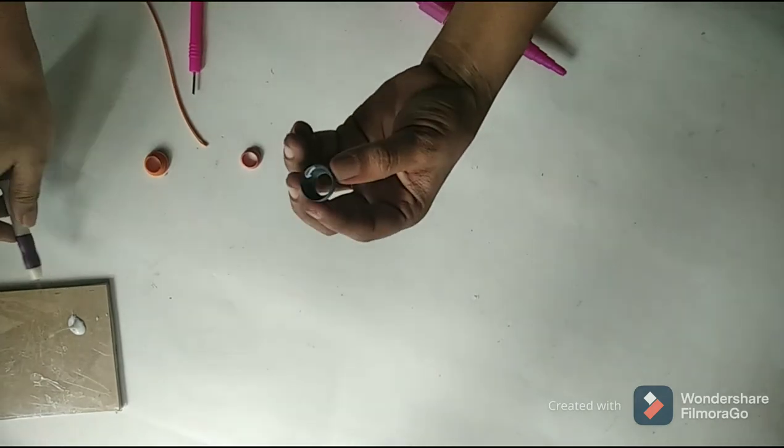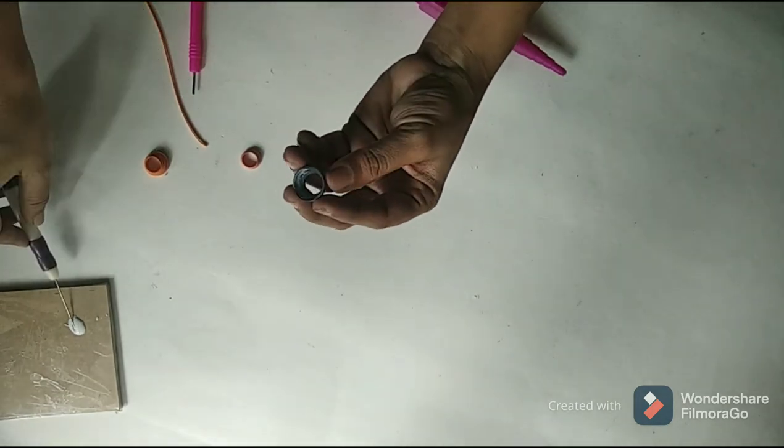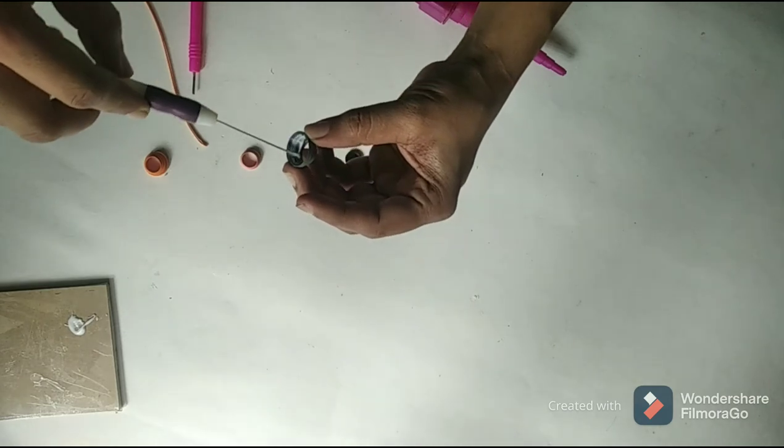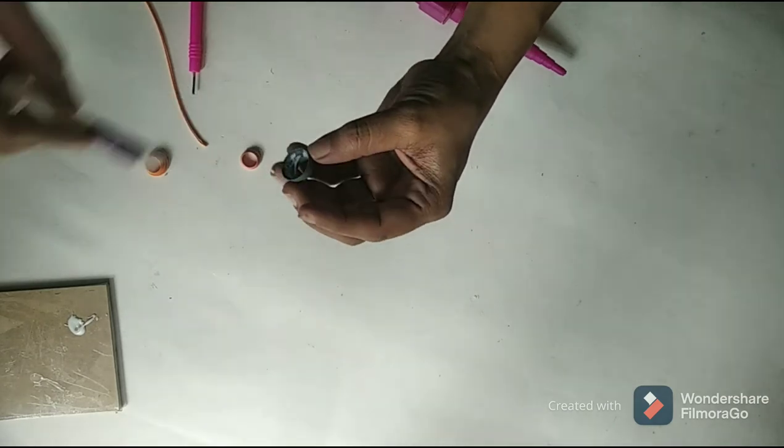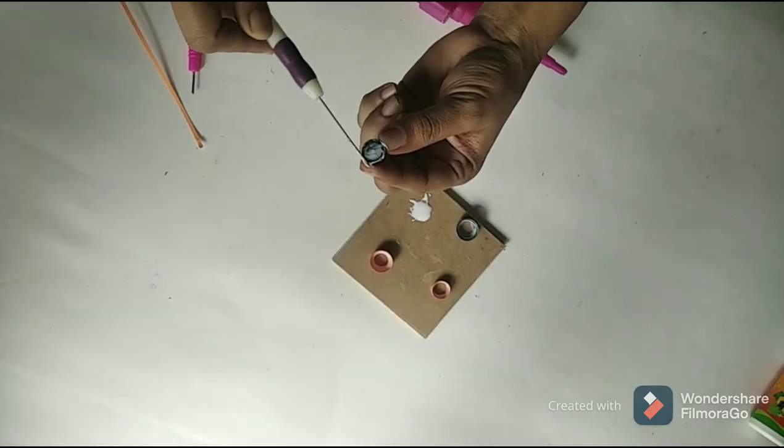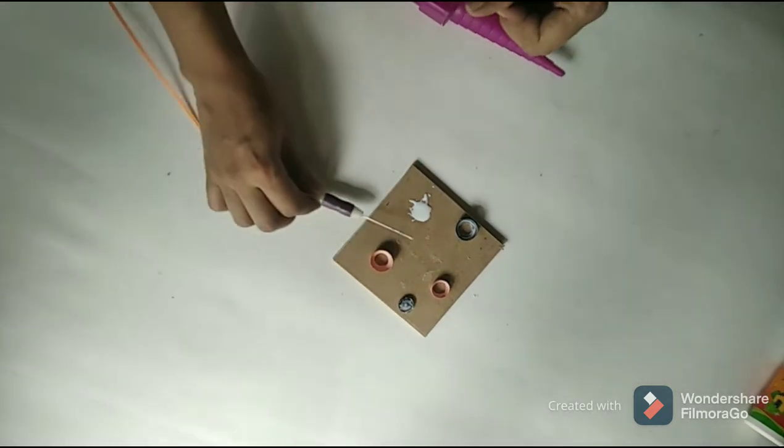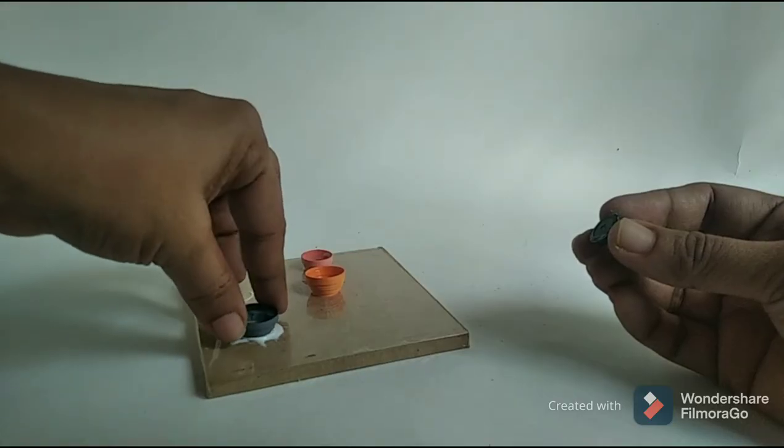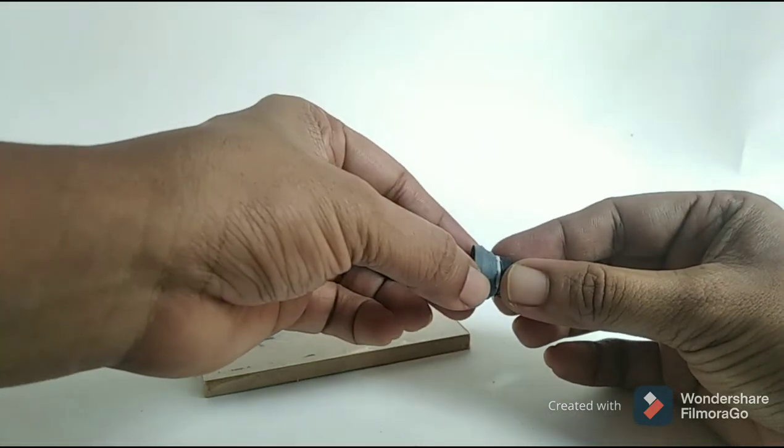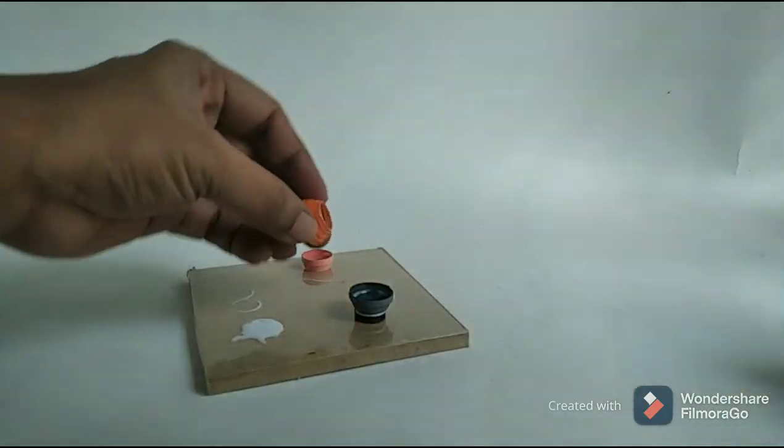Then I apply glue on the insides of the molded sheets to fix them. Once dried, I join all the parts to make the vase.